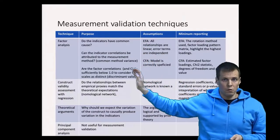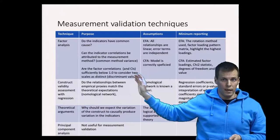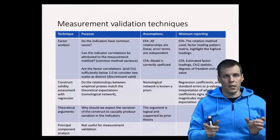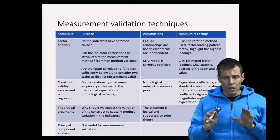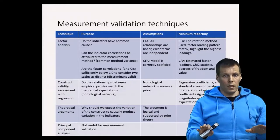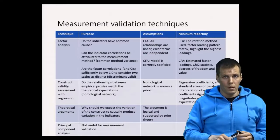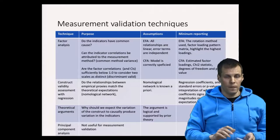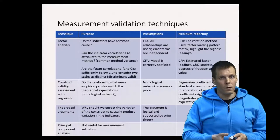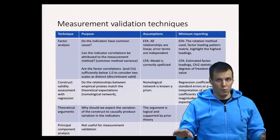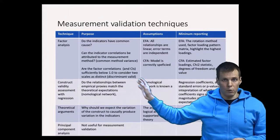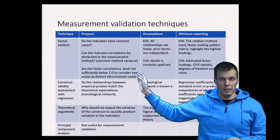Factor analysis is also used for discriminant validity assessment. The idea of discriminant validity is that two scales are discriminant valid or empirically distinct if the factor correlation is well below one. For example, if two factors correlate at 0.99, it is difficult to claim that those two factors represent two different things. So discriminant validity is whether two scales are empirically distinct.